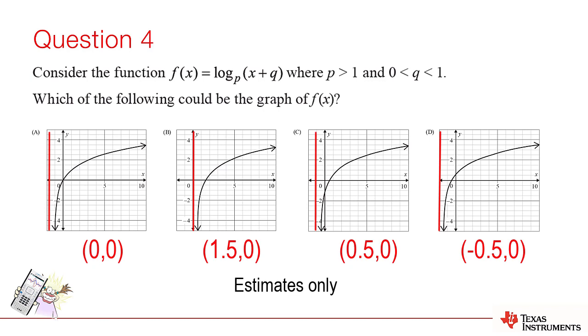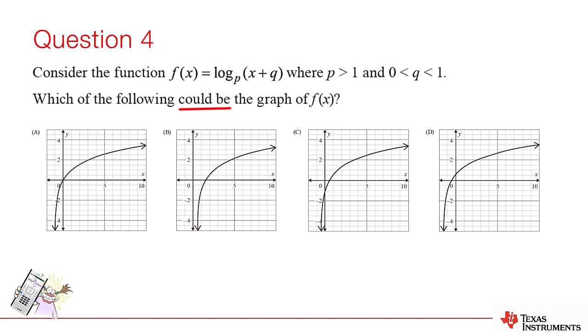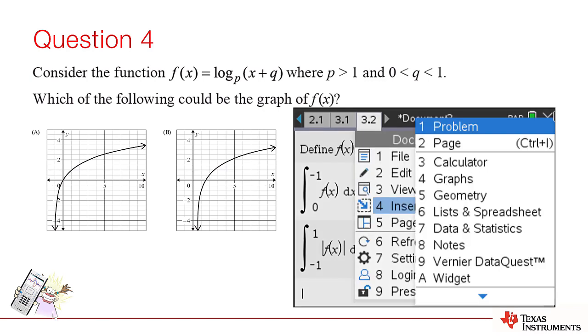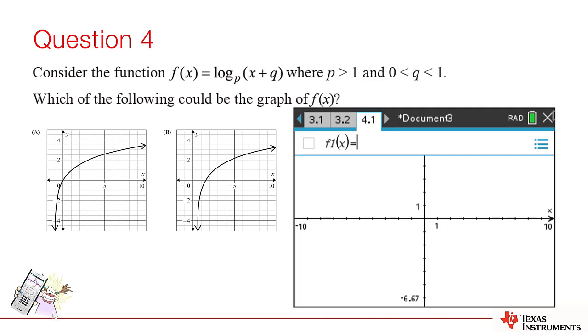The question says could be. That means three of the graphs would be impossible under the given transformations and corresponding restrictions. So, you could just guess some values for p and q according to the restrictions and then enter them into the question.